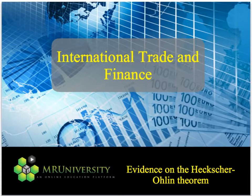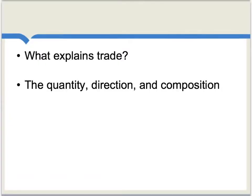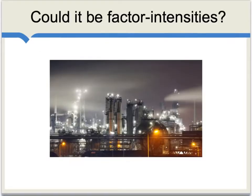Now, let's take a look at what the evidence says about the Heckscher-Ohlin theorem. You should be watching this in conjunction with our video on the Heckscher-Ohlin theorem itself. We're going back to the key question of what explains trade — the quantity, the direction, and also the composition of that trade. One possible explanatory factor is factor intensities, namely whether your country has a lot of capital or a lot of labor relative to other countries in the world.